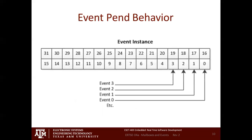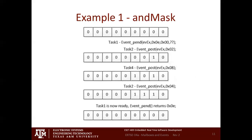Let's say I've got an event instance here with event one, event two, event three, event four, event five — a 32-bit event instance. Let's do an example for an AND mask. The event pend takes an AND mask and an OR mask. If the OR mask is zero, it ignores it; if the AND mask is zero, it ignores that. So AND mask of 0xE — the bit pattern for 0xE, looking at the last four bits, is 1, 1, 1, 0.